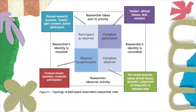If the researcher is an observer as participant, it will involve them being the observer or spectator only. They will have moderate participation in any activities carried out by the participants and they will notify the participants of their purpose of becoming the observer. Finally, when the researcher becomes a complete observer, they will not reveal their purpose to the participant, which raises ethical issues. They will only become the spectator and data will be interpreted solely based on the judgment and opinion of the observer, which can lead to bias.